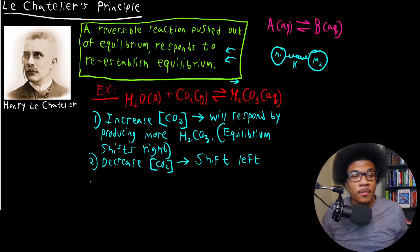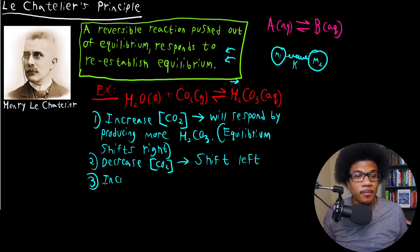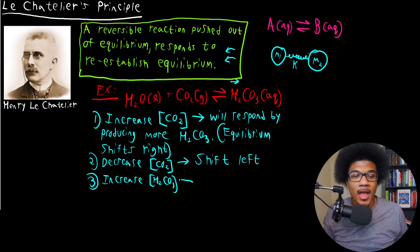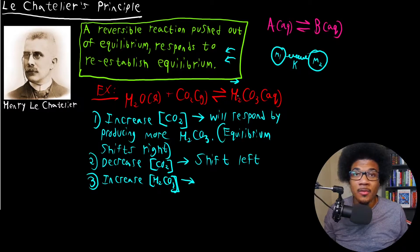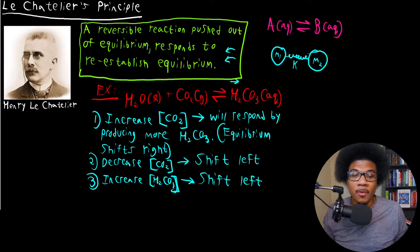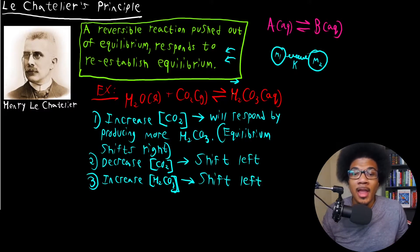For the last scenario, let's say we increase the concentration of H₂CO₃ — our product. The system will respond by trying to produce more CO₂, so that will also shift the equilibrium left. The reverse reaction will dominate and it will try to create more CO₂ in order to account for the H₂CO₃ that was added.